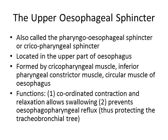To prevent food from the esophagus going into the pharynx, we have the upper esophageal sphincter, also called the pharyngeal esophageal sphincter or cricopharyngeal sphincter. It is located in the upper part of the esophagus and is formed by the cricopharyngeal muscle, the inferior pharyngeal constrictor muscle, and some circular muscle at the upper end of the esophagus.